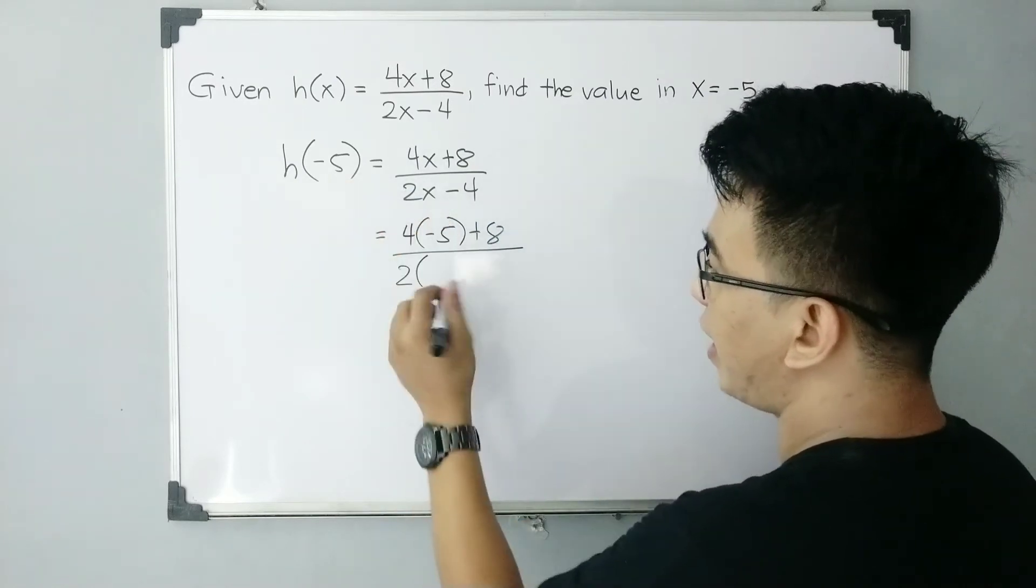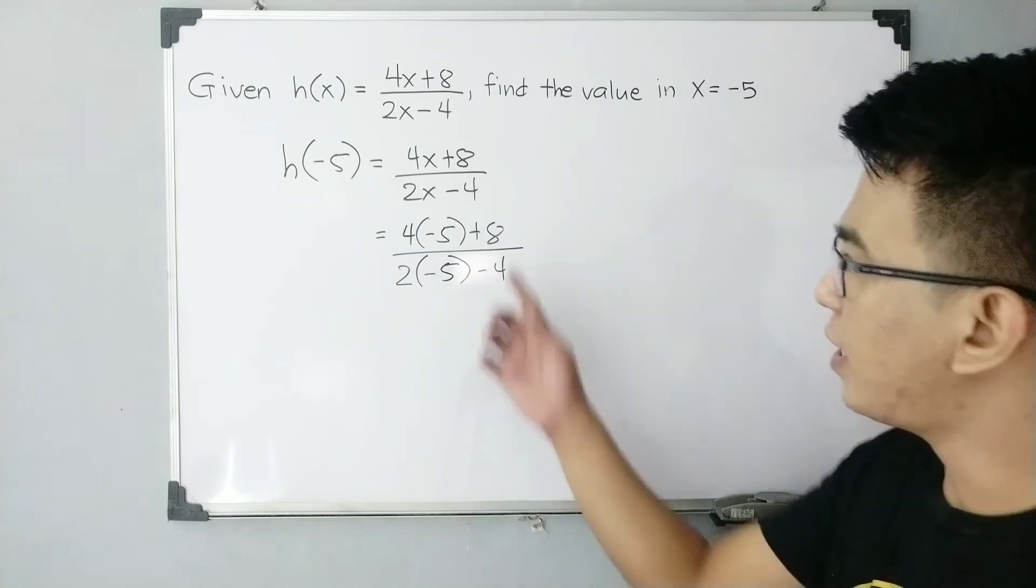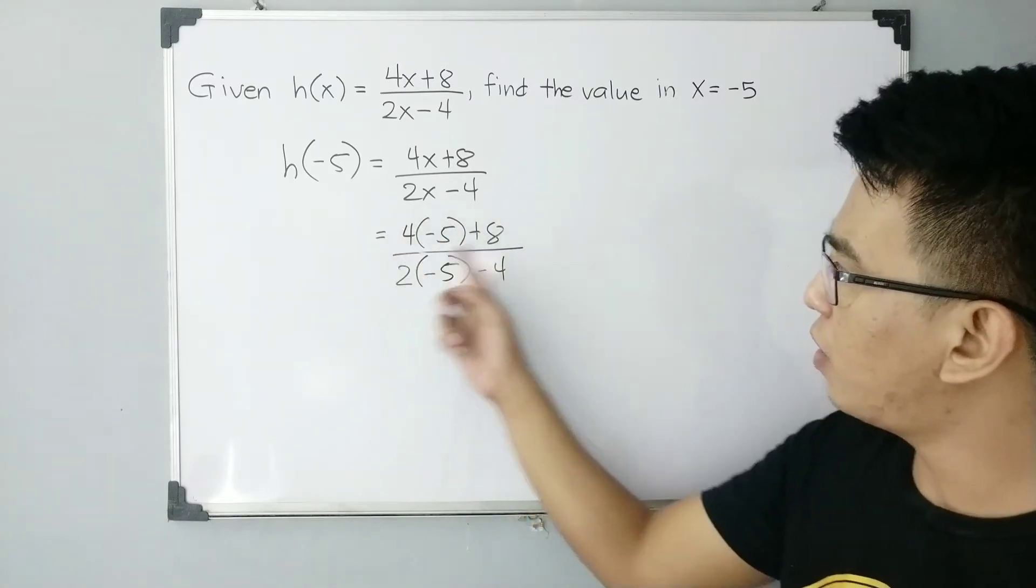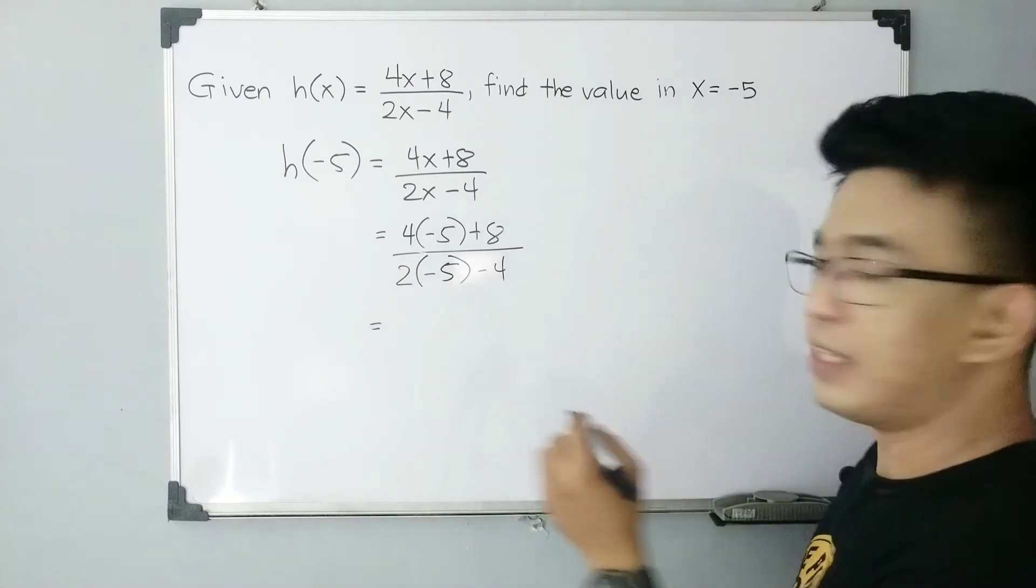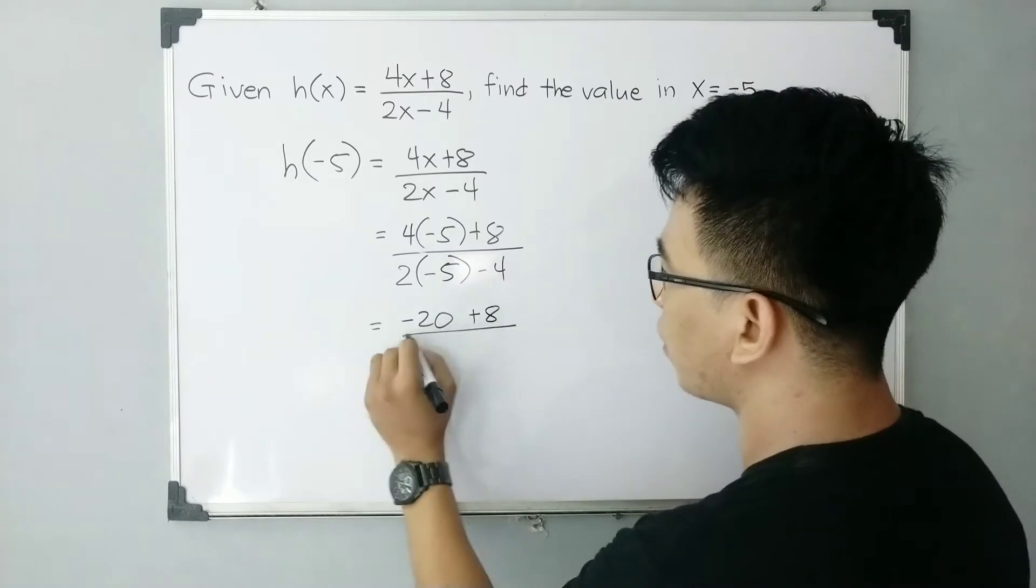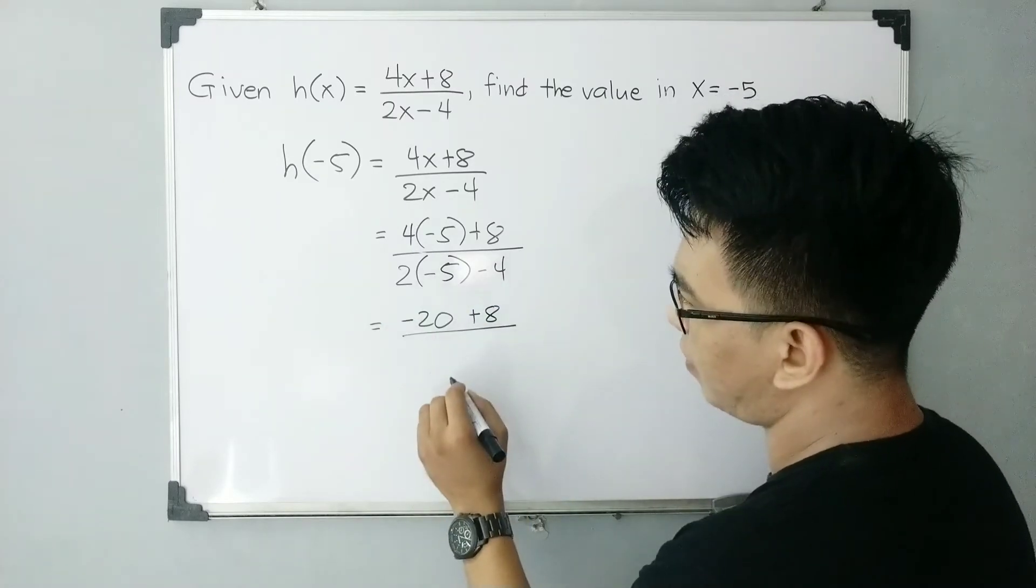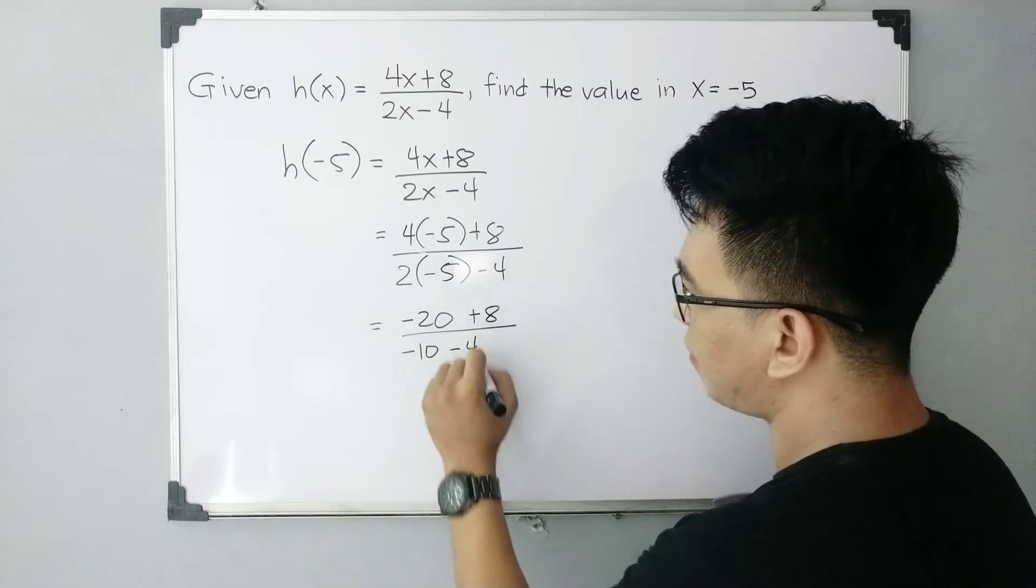And simplifying your numerator, 4 times negative 5, that is negative 20 plus 8 over 2 times negative 5, that is negative 10 minus 4.